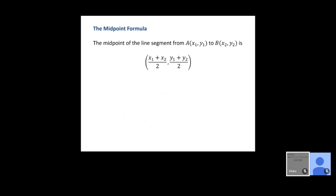The midpoint formula for a segment from (x₁, y₁) to (x₂, y₂) is M = ((x₁+x₂)/2, (y₁+y₂)/2). We add the x-values and divide by 2, add the y-values and divide by 2 — that's finding the average of the x's and the average of the y's — then write the result as an ordered pair.